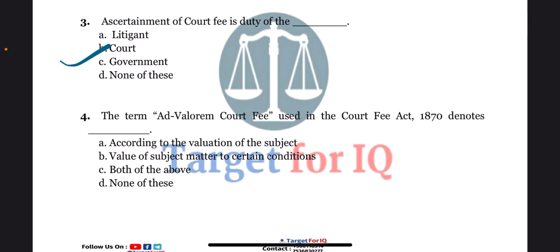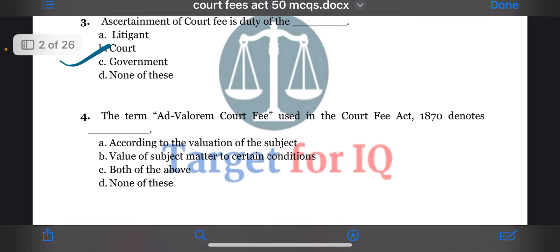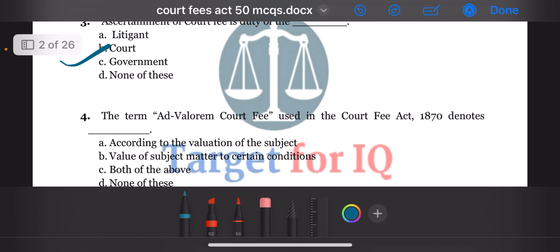Next question: the term ad valorem court fee used in the Court Fees Act 1870 denotes dash. The options are A. According to the valuation of the subject, B. Value of subject matter to certain conditions, C. Both of the above, or D. None of these. The correct answer is option A.